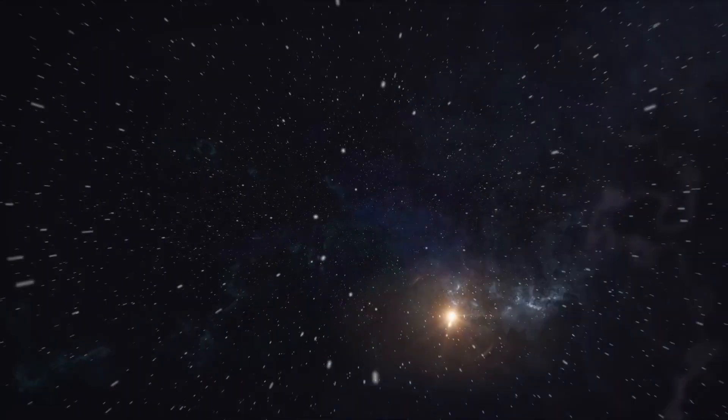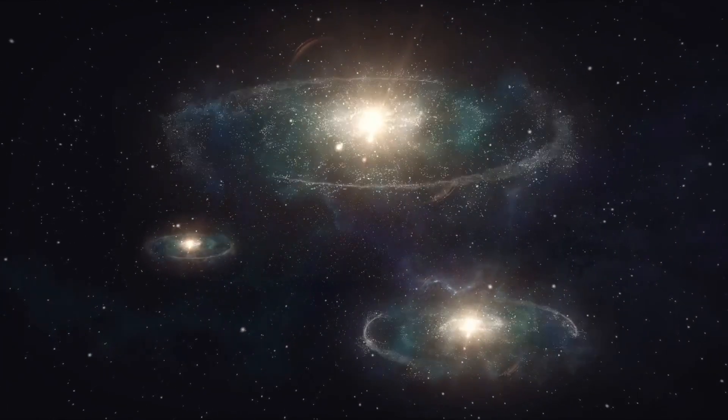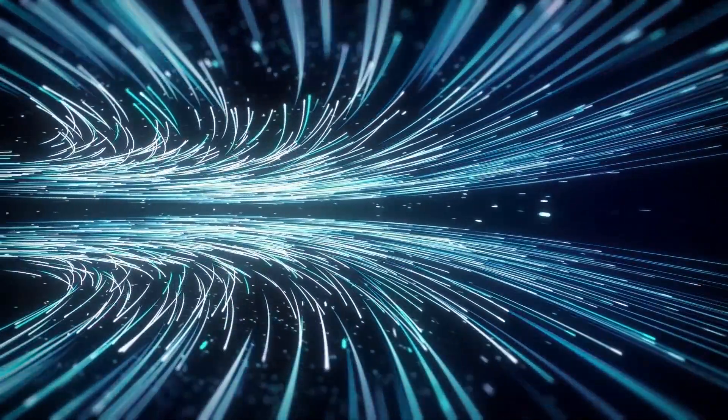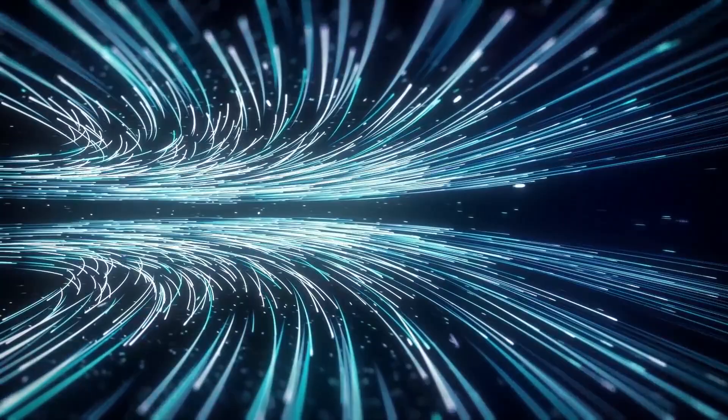Now consider why the density begins to rise at the boundary. It's because solar plasma and interstellar plasma collide here. Imagine two cosmic speed streams meeting head-on. Of course, the density increases near the site of impact. It's like being stuck in a traffic gridlock, a tangle of particles.